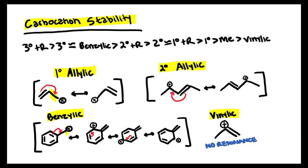However, you could also have a carbocation that's secondary benzylic or tertiary benzylic. Benzylic carbocations are considered so stable because of all the resonance they have.